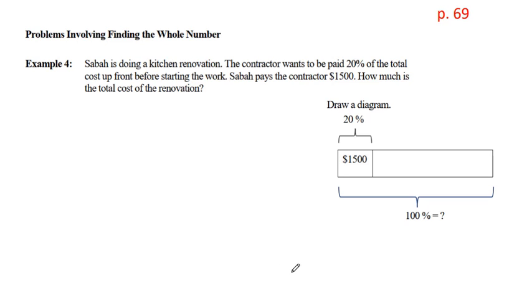Sometimes we face problems that involve finding a whole when we're given a piece of or a part of. And example number four is like this. Saba is doing a kitchen renovation. The contractor wants to be paid 20% of the total cost up front before starting the work. Saba pays the contractor $1,500. That $1,500 is 20%. How much is the total cost of the renovation? A diagram or image can really help us see what's going on here. That Saba is paying $1,500, which is just a chunk or a piece of the total cost. And that chunk amount is worth 20%. What we don't know is the total, which includes that $1,500.